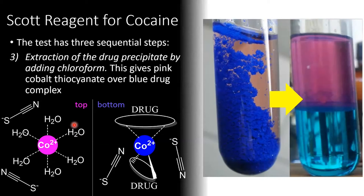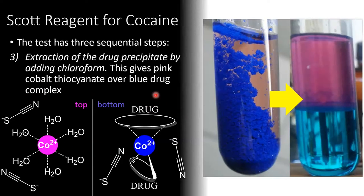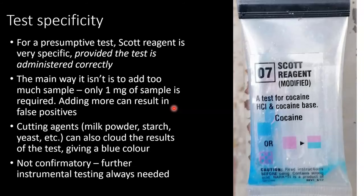Finally, we get to the last step where we break the final glass ampoule, releasing chloroform into the mixture. Chloroform and water don't mix, meaning it forms a two-phase system as shown. Chloroform is denser than water, so it sits on the bottom with the water phase on top. The positive result at this stage is a pink solution on top in the water and a blue solution on the bottom in the chloroform. This translates to cobalt thiocyanate surrounded by water molecules on top, and the drug bound to cobalt dissolved in chloroform as the bottom layer.